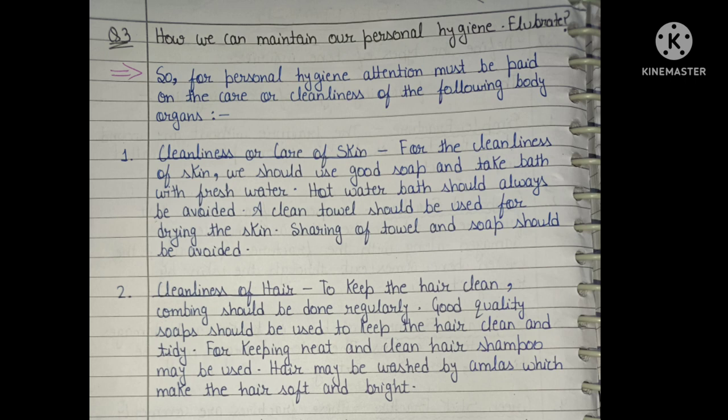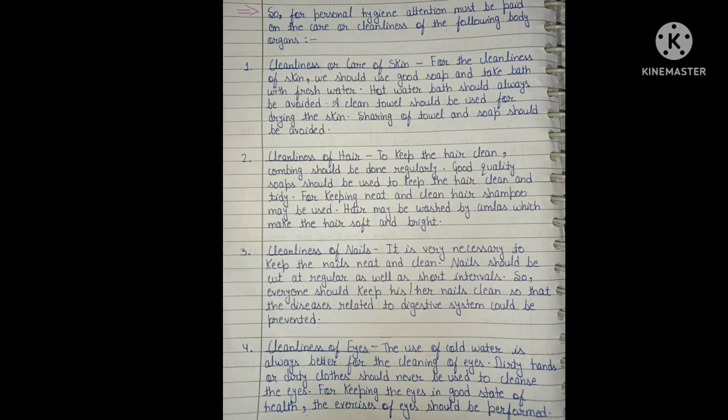Second, cleanliness of hair: to keep the hair clean, combing should be done regularly. Good quality soaps should be used to keep the hair clean and tidy. Shampoo may be used for keeping neat and clean hair. Hair may be washed with conditioner to make it soft and bright. Third, cleanliness of nails: it is very necessary to keep the nails neat and clean. Nails should be cut at regular and short intervals. Everyone should keep nails clean so that diseases related to the digestive system can be prevented.